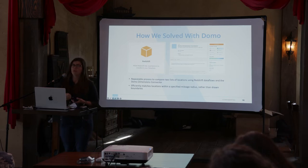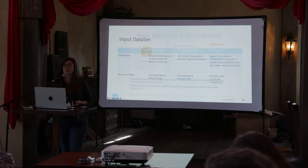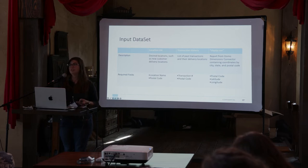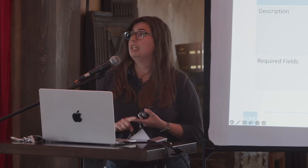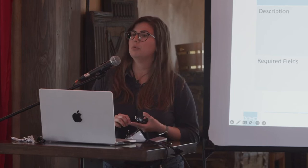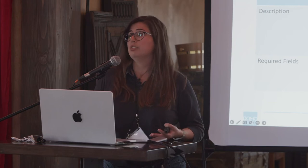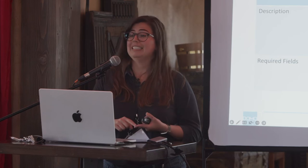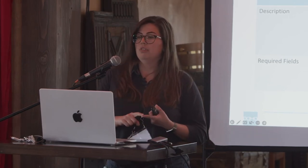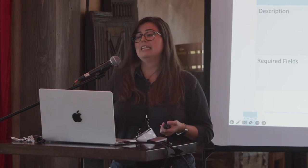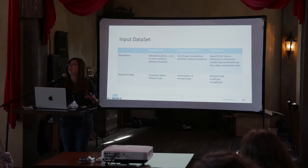This is useful because now we're not relying on drawn boundaries such as state lines. To do this, you need three input datasets to a Redshift data flow. First is the location list — in my example, Fort Thomas would be in this list — which could be new customer delivery locations you're sourcing capacity for, requiring just a location name and postal code. Second is the transaction history: locations you've delivered to in the past, requiring a transaction ID and postal code. Finally, you need the City Zip report from the Domo Dimensions connector, which gives city, state, postal code, and coordinates for nearly every location in the country. The fields you need are postal code, latitude, and longitude.